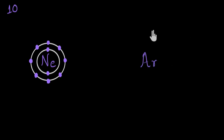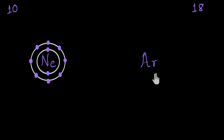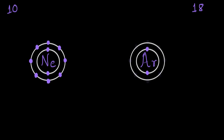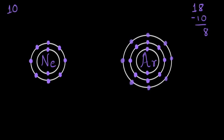Argon. Its atomic number is 18, which means there will be 18 protons in the nucleus of argon. Since we have taken a neutral atom, there will be 18 electrons going around the nucleus. In the first shell or K shell, we can have a maximum of two electrons. In the second shell, a maximum of eight. So far that's 2 plus 8 equals 10 electrons — 18 minus 10 leaves us with 8 electrons. So in the third shell, all eight electrons will be accommodated. You can notice that even in argon's outermost shell or valence shell, we have eight electrons.